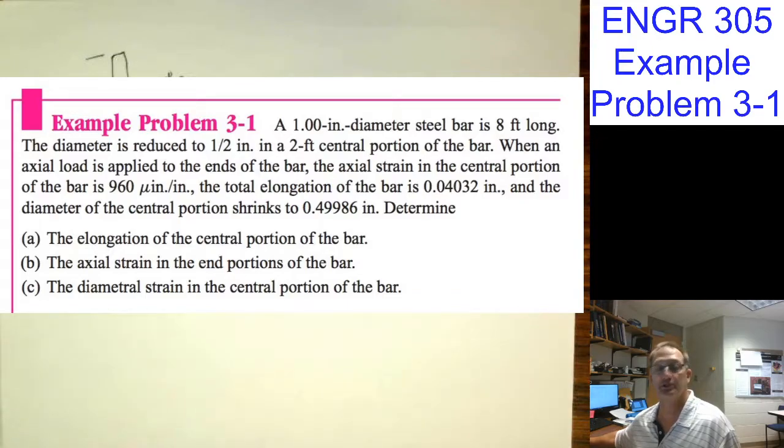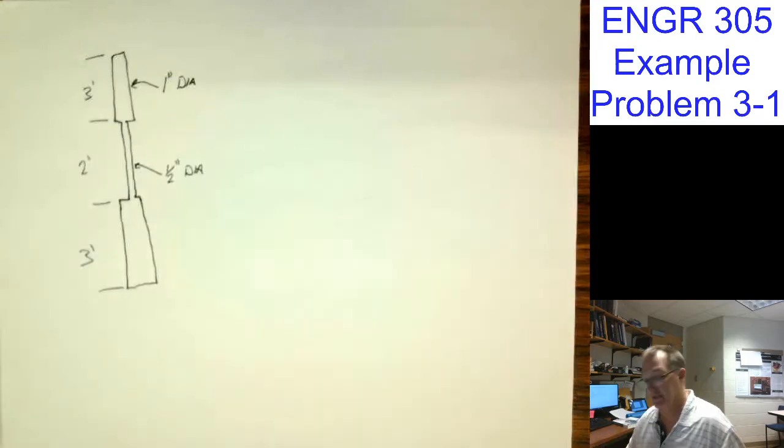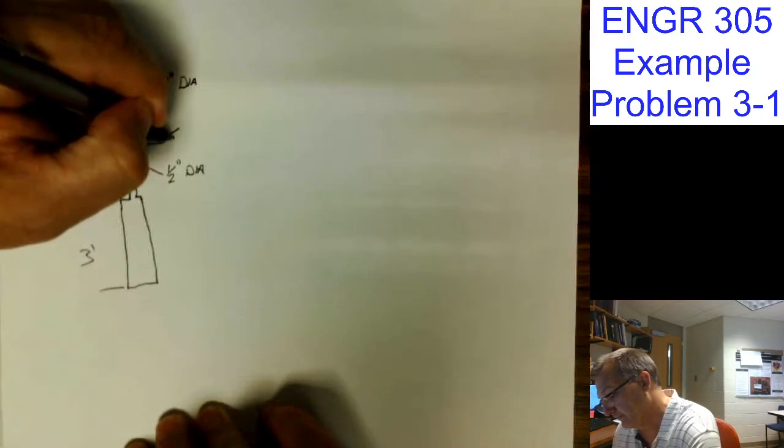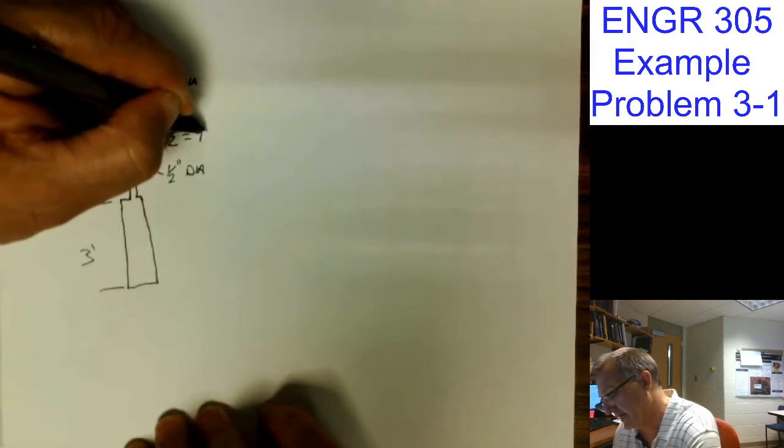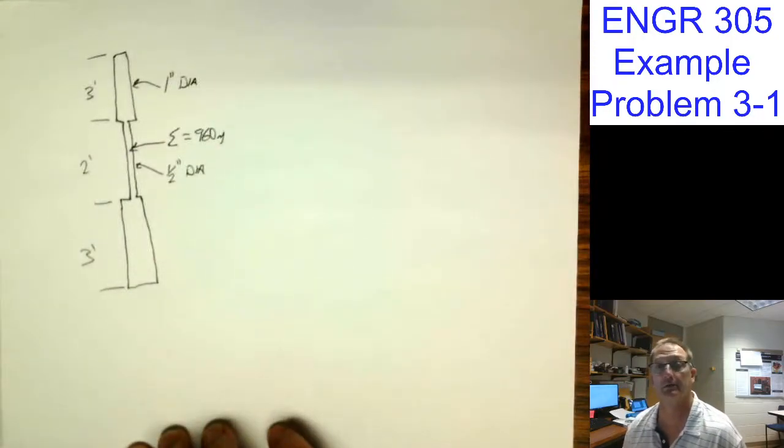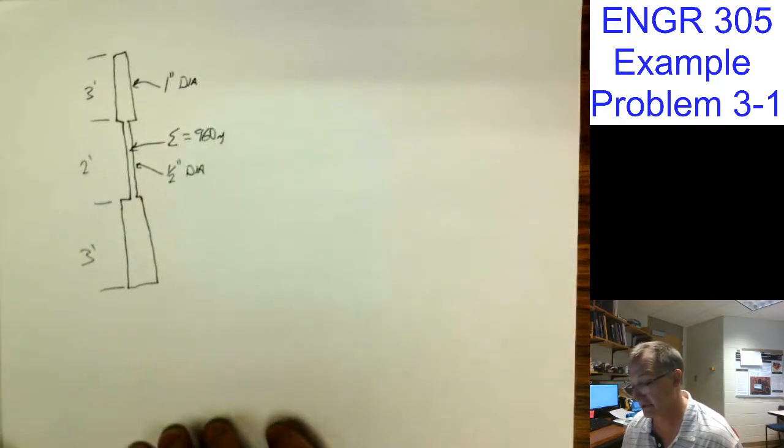When an axial load is applied to the ends, the axial strain of the central portion is 960 micro-inches per inch. So the strain here, strain is equal to 960 micro-inches per inch. I just put it as micro. That's it, micro, done.